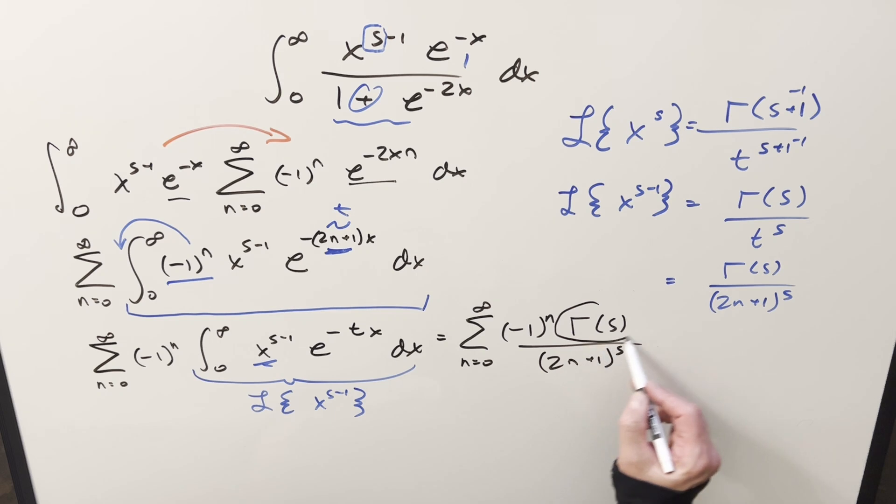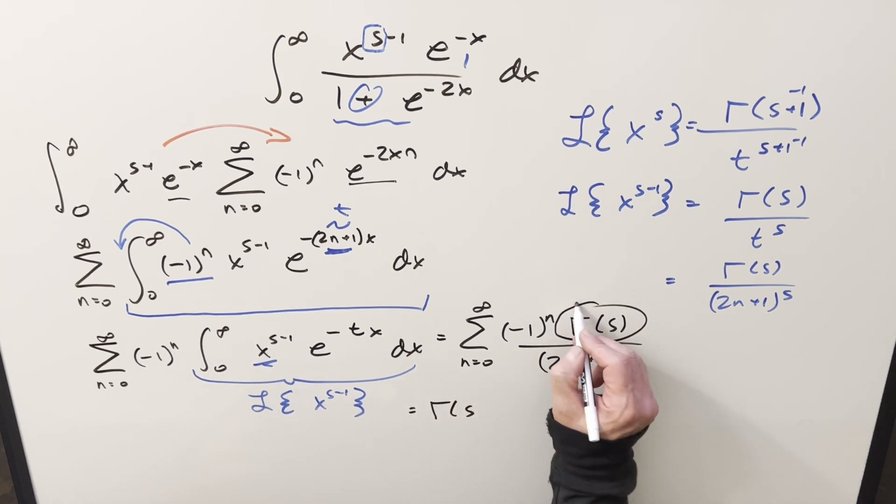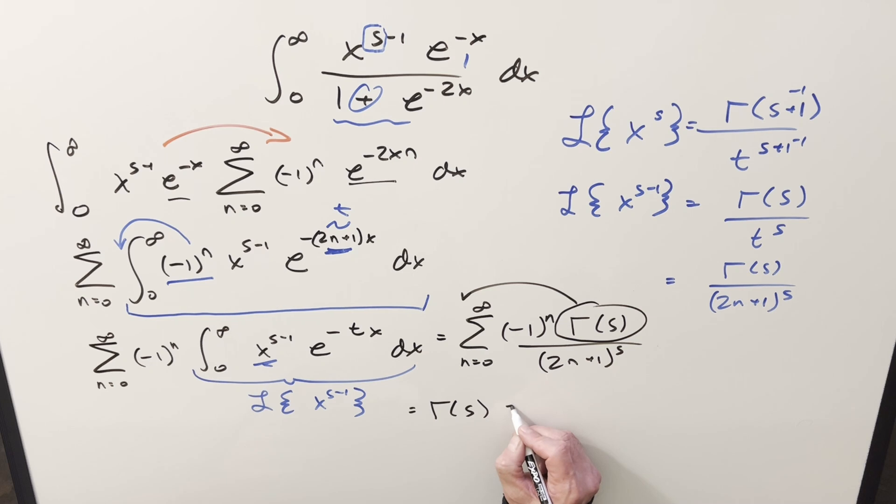But now gamma of s is just going to be a constant with respect to n. So I can rewrite this again. We can bring the gamma of s out front of this whole thing. And then we're just going to have this sum. And this is just going to be minus 1 to the n over 2n plus 1 to the s.